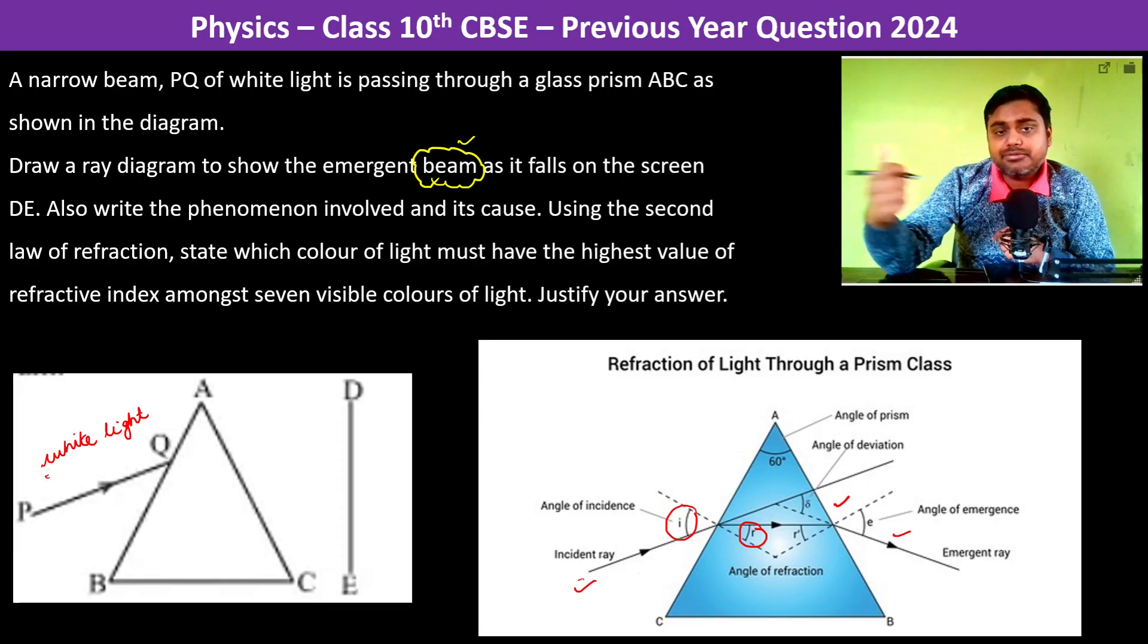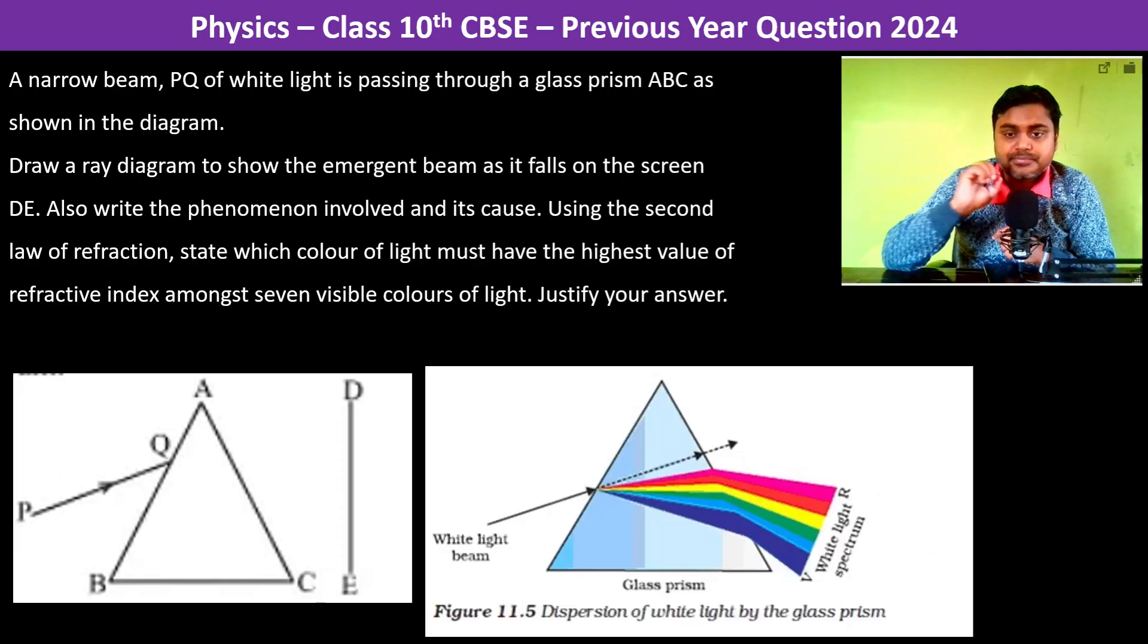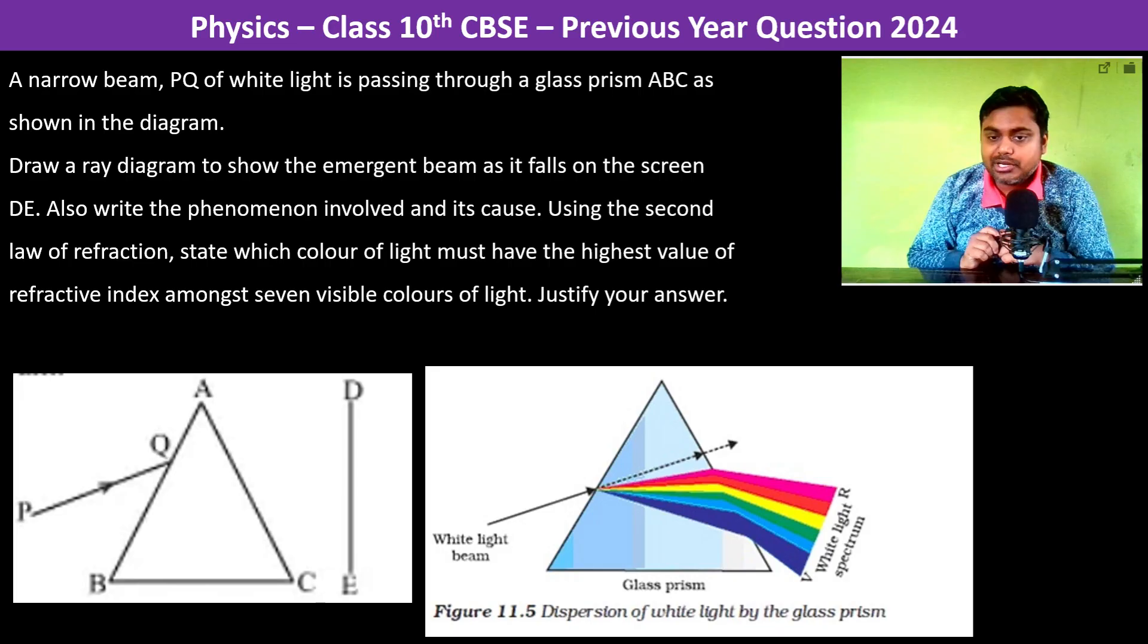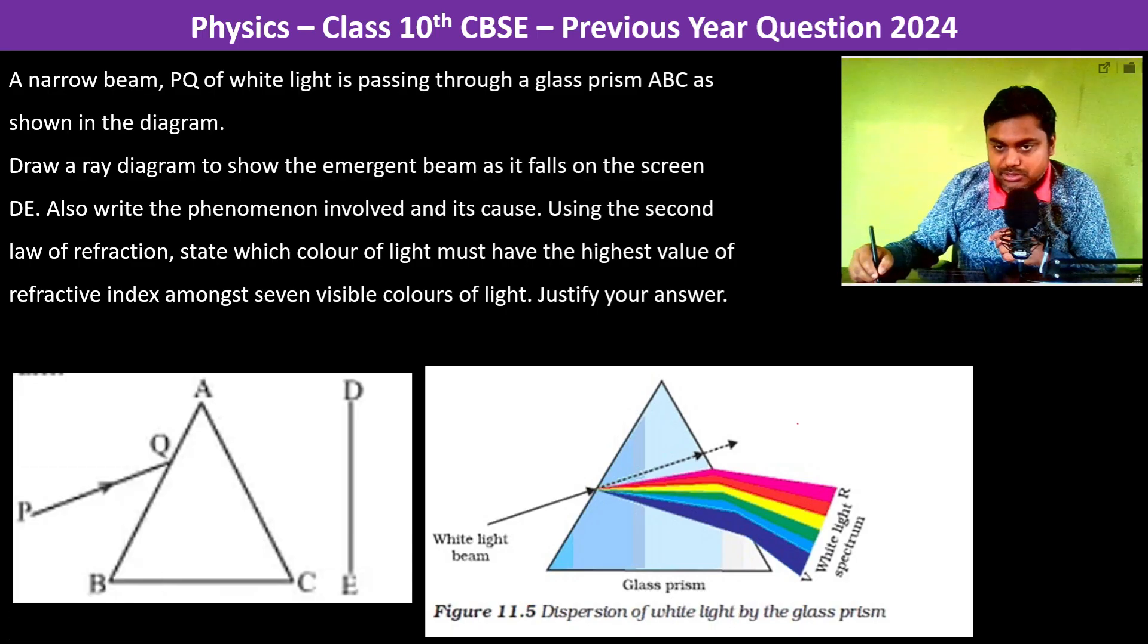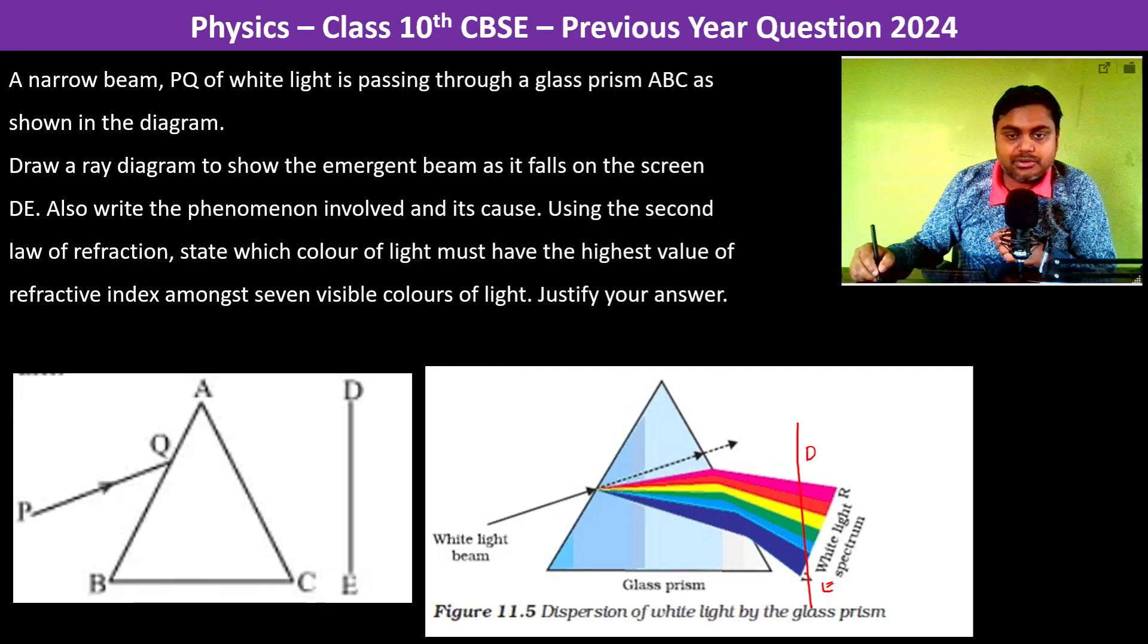So this is the spreading of white light into different colors and this is what should be shown. Now here one modification has to be done - the screen is like this. So it should be something like this on the screen, like that.